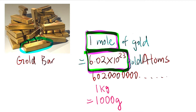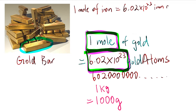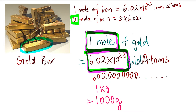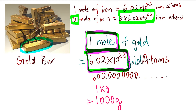Another example: if you have one mole of iron — iron is a very typical metal — how many iron atoms would there be? Remember, in one mole there are 6.02 times 10 to the power 23 iron atoms. What if you have 5 moles of iron? It would be 5 times 6.02 times 10 to the power 23 iron atoms. For 20 moles it would be 20 times 6.02 times 10 to the power 23 iron atoms.